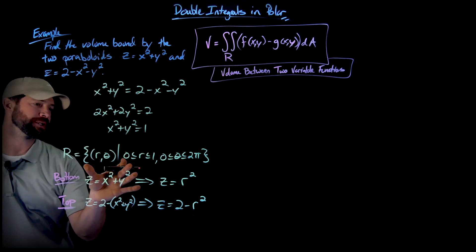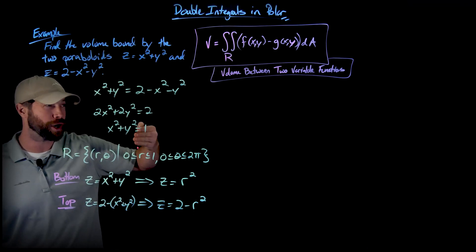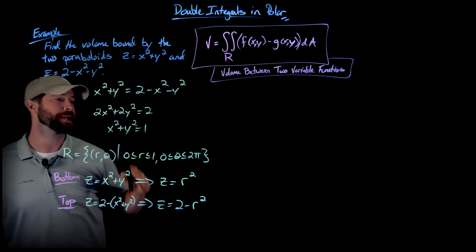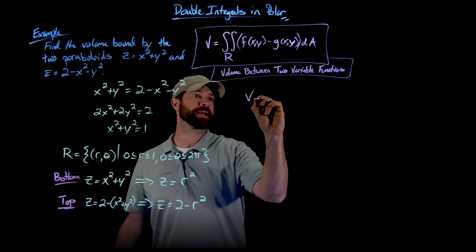So let's get it set up right now. So I have my region. My r values go from 0 to 1, theta from 0 to 2 pi.